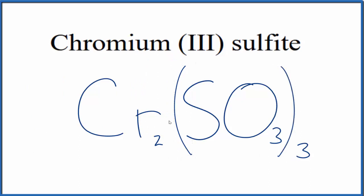And this is the formula for chromium (III) sulfite, Cr₂(SO₃)₃. Let's quickly check our work, though.